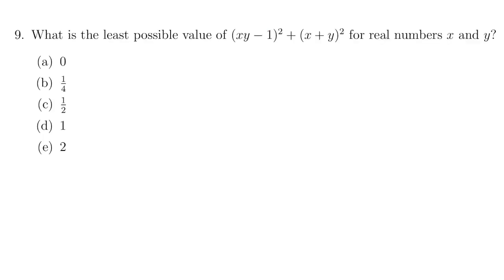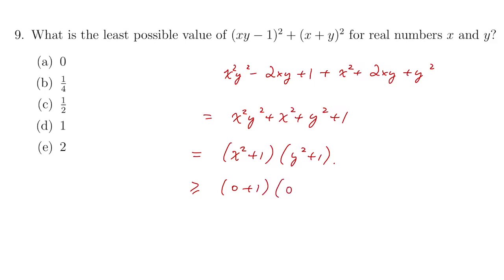Question 9. By expanding, we have x squared y squared minus 2xy plus 1, plus x squared plus 2xy plus y squared. And that's x squared y squared plus x squared plus y squared plus 1. Factorizing, we have x squared plus 1 multiplied by y squared plus 1. The minimum value of this expression is 0 plus 1 times 0 plus 1, and that's 1. So the minimum is 1, answer is D.